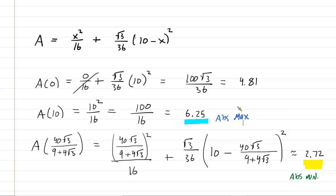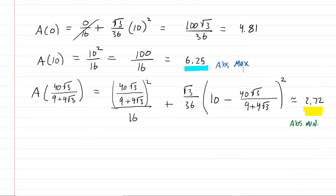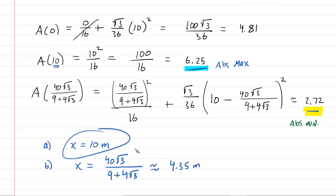Now let's just make sure we've answered the question. We'll go back. And it says, how should the wire be cut? So they want the value of x. They want to locate how much of the wire needs to be cut to produce the maximum and the minimum. So for part a, the maximum, we noted that a maximum amount of area was obtained when x equaled 10. Now that's interesting because technically when x equals 10, that's the full extent of the wire. So you're not really even cutting it. And then for the minimum area, which was 2.72, that was when x equaled this ridiculous value of 40 radical 3 over 9 plus 4 radical 3. And if you're interested, that's roughly 4.35. And these both would be measured in meters. So these would be the correct answers for part a and part b.